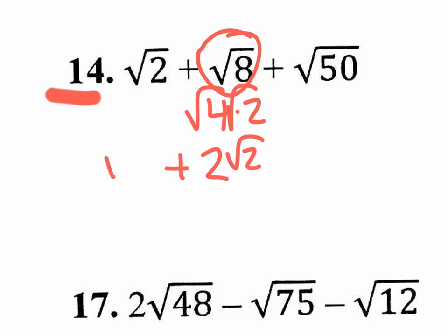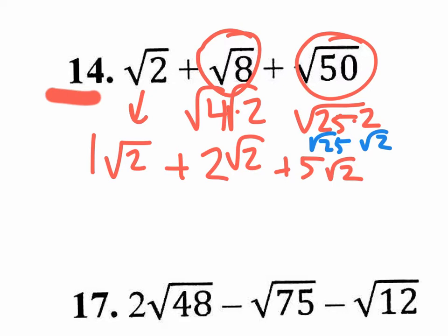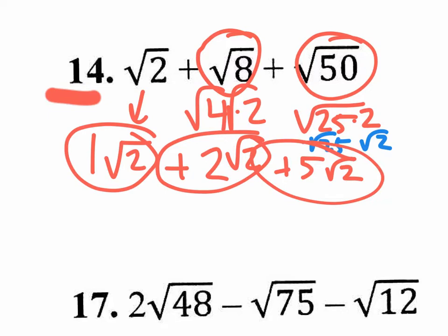Now you'll be able to add it with this square root of 2 that you just brought down — it's really 1 square root of 2. But before we add those together, let's work on the square root of 50. That becomes the square root of 25 times 2. So when you split those, you get the square root of 25 and the square root of 2, and the square root of 25 is 5, so that's 5 square root of 2. Now you can add 1 square root of 2 plus 2 square root of 2 plus 5 square root of 2, giving you a total of 8 square roots of 2.